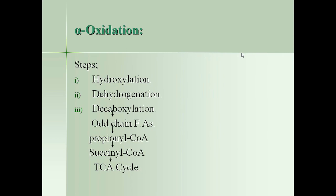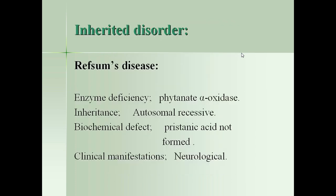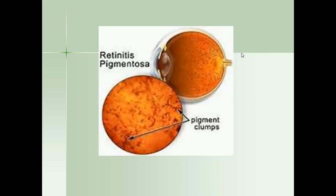Alpha-oxidation steps include hydroxylation, dehydrogenation, and decarboxylation, then production of an odd-chain fatty acid. It converts phytanic acid — a 20-carbon branched-chain phytanic acid — using alpha-hydroxy phytanoyl-CoA enzyme to convert it into pristanic acid. If this enzyme — phytanoyl-CoA alpha-hydroxylase — is deficient, it leads to Refsum disease which causes retinitis pigmentosa.